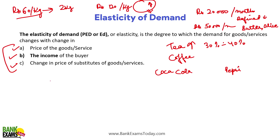If the price of butter increases, the demand for bread may decrease, because bread and butter are generally consumed together. If butter is very expensive, people will consume less of it. These are complementary products.